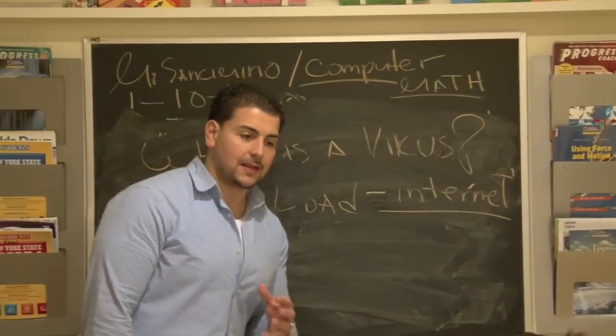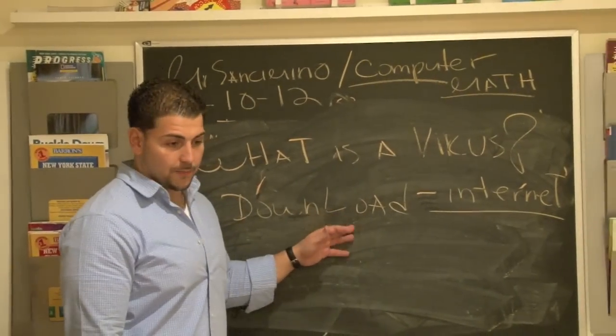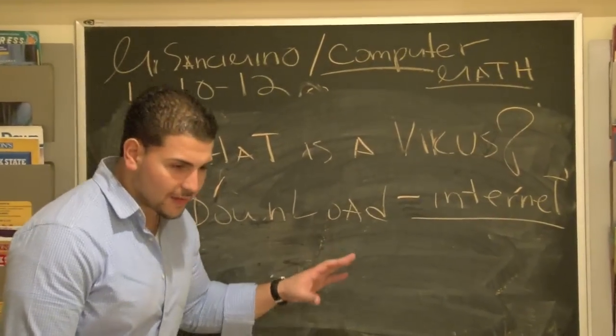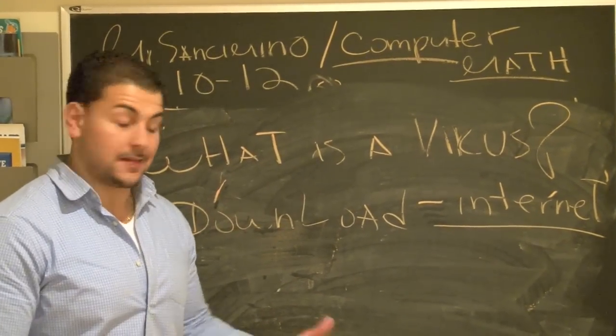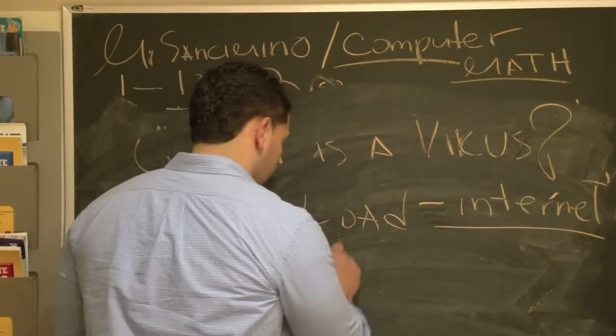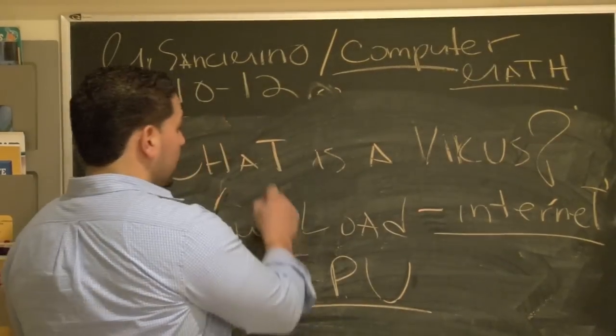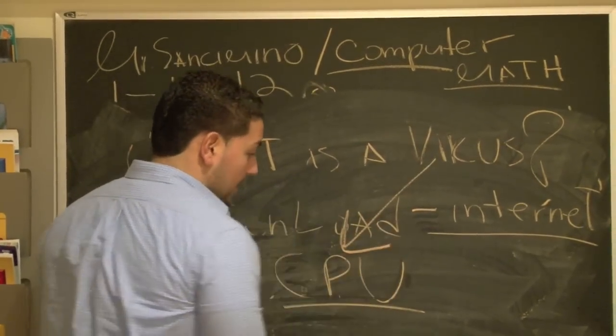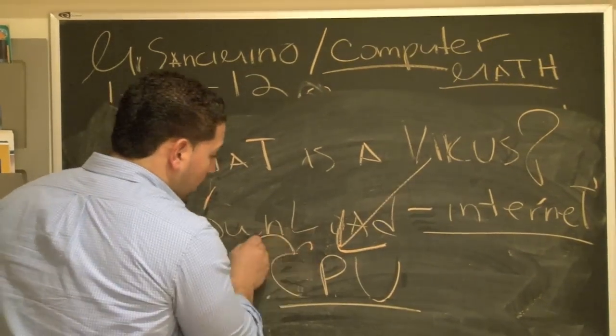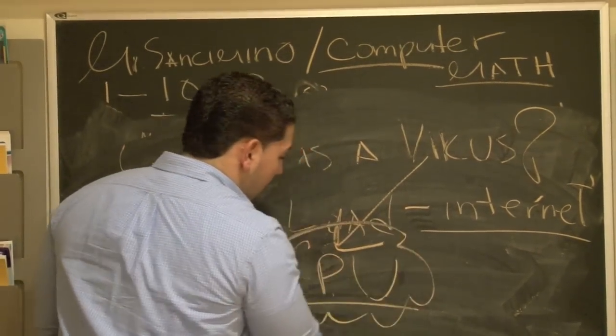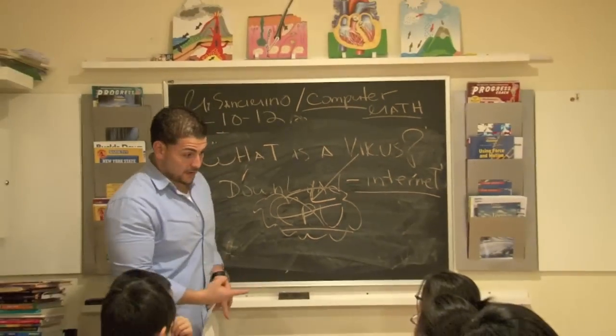All right, so a virus basically is something that attacks what on your computer, though? What's the most sensitive, delicate part of your computer? CPU. The CPU. Okay? CPU. So the virus comes in, it attacks it. Okay? It comes in, it attacks, it circles it around, and it tries to eliminate the CPU. Okay?